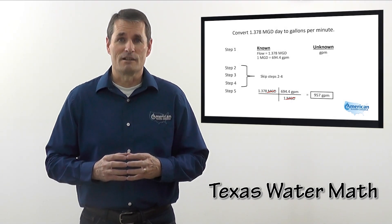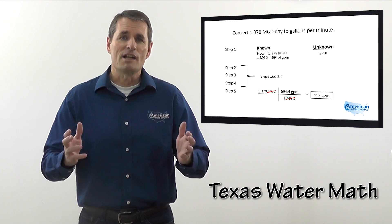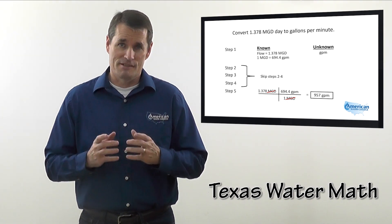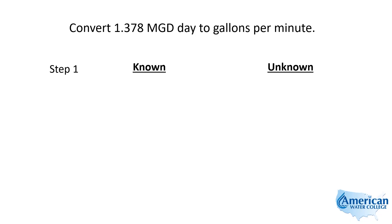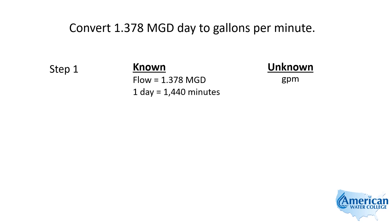I'm Joe Kirshner with American Water College. Watch as I use my five-step approach to solve this problem. This next unit conversion problem reads: convert 1.37 million gallons per day to gallons per minute. So we're looking for gallons per minute. They gave us the flow of 1.378 MGD and now we're going to go ahead and convert that.